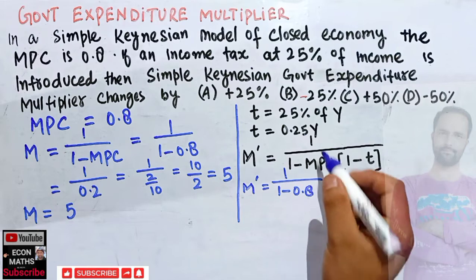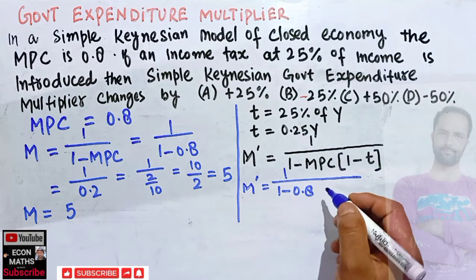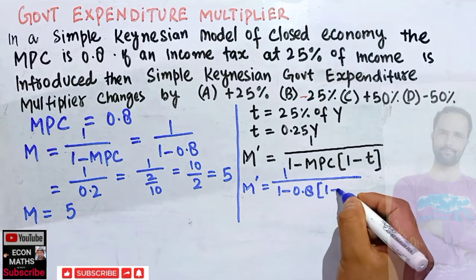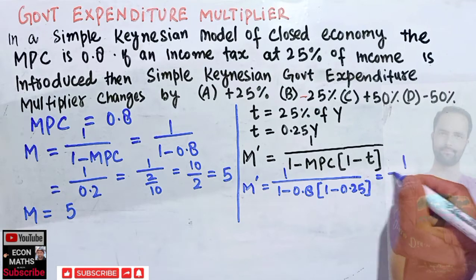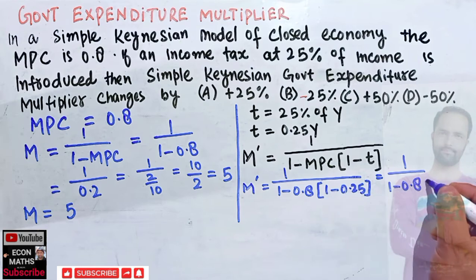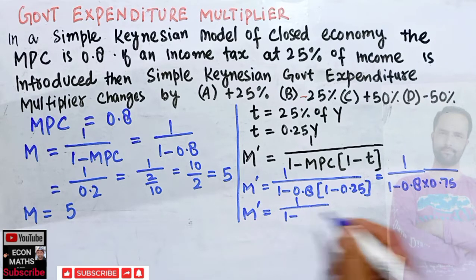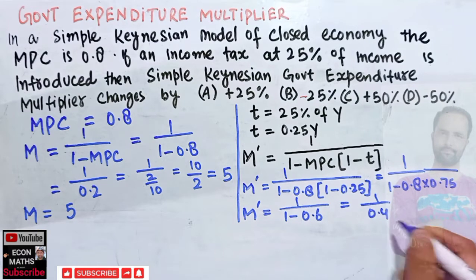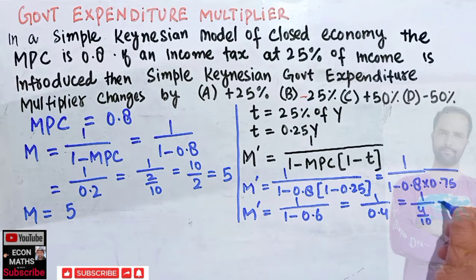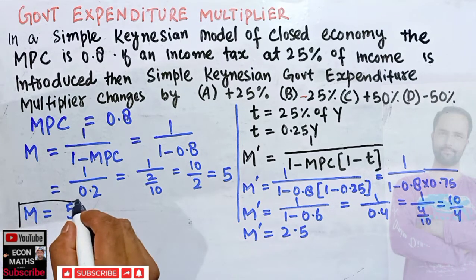Substituting the values, our new multiplier is 1 upon (1 minus 0.8 times (1 minus 0.25)). Now, 1 minus 0.25 equals 0.75, so we have 1 upon (1 minus 0.8 times 0.75). That gives 0.8 times 0.75 equals 0.6, so it becomes 1 upon (1 minus 0.6) equals 1/0.4, which is 10/4, giving us a new multiplier of 2.5.